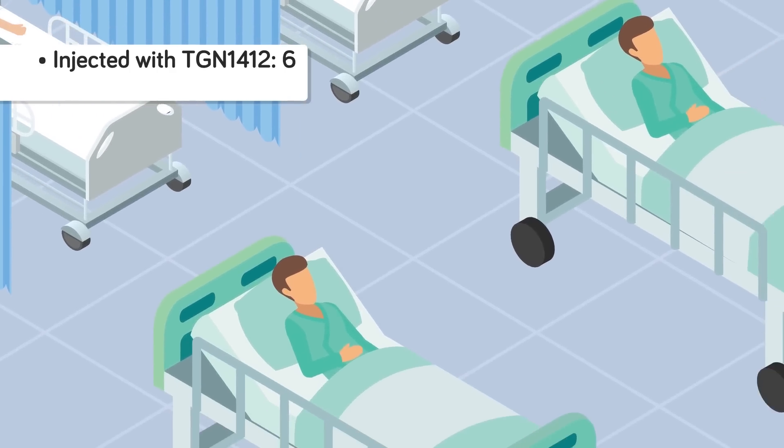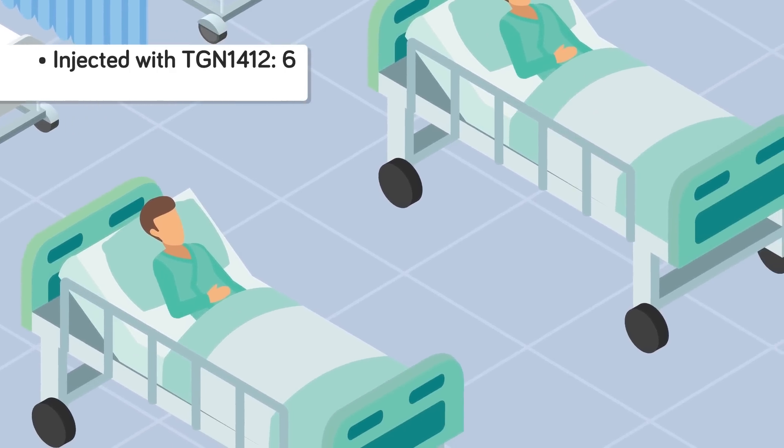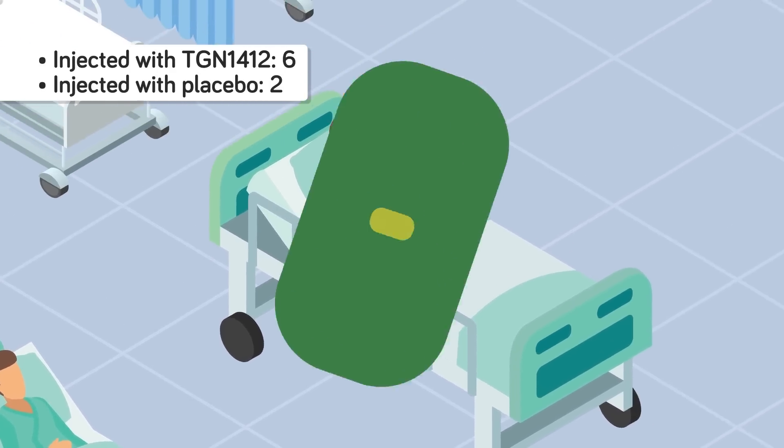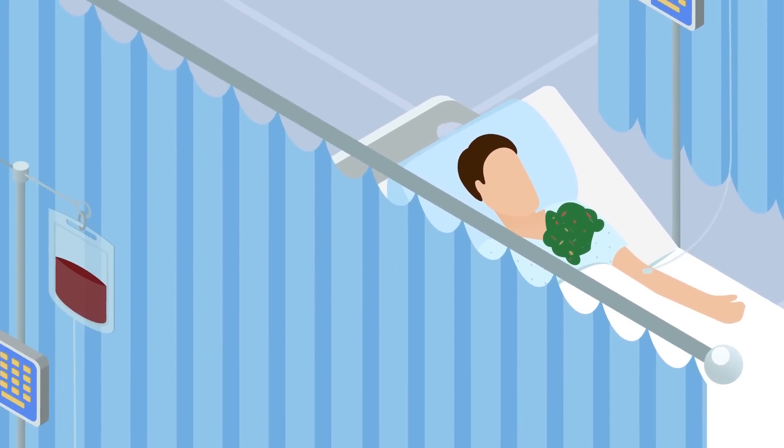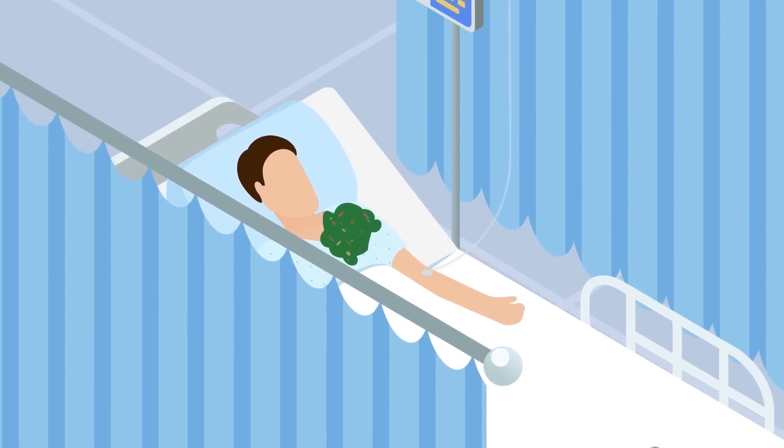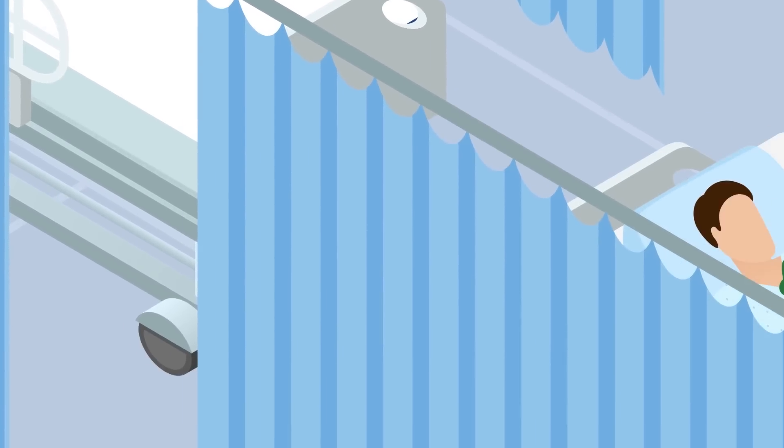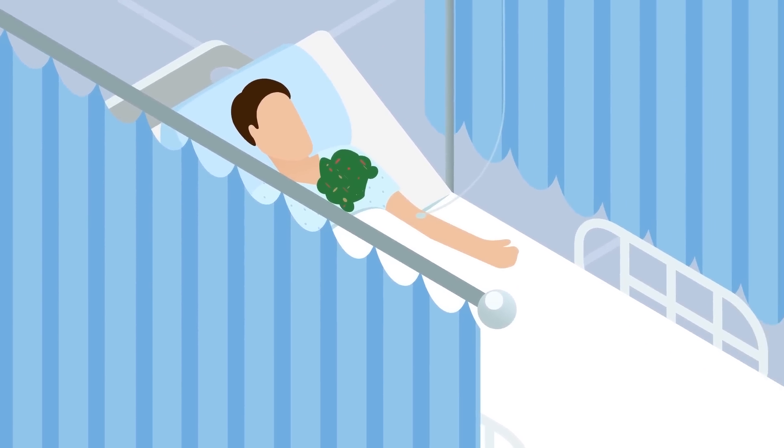After taking the drugs, things turned very dark for six of them. Two lucky others took the placebos. The story sounds like something from a horror movie. It was all manic, everything was happening all at once. They were vomiting, they were screaming in pain, people fainting, said one BBC documentary on the disaster.